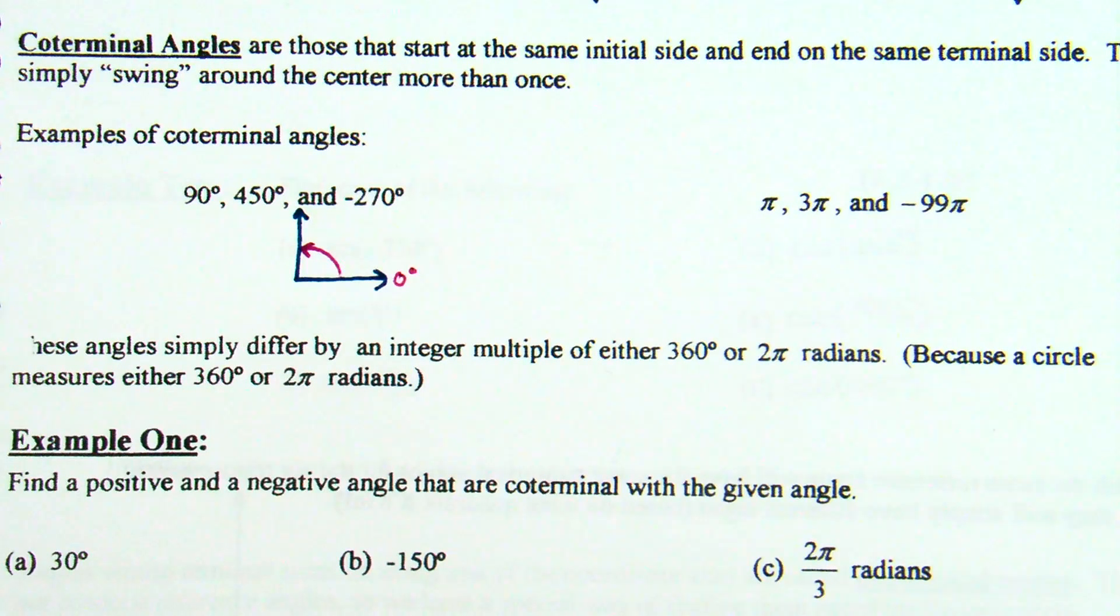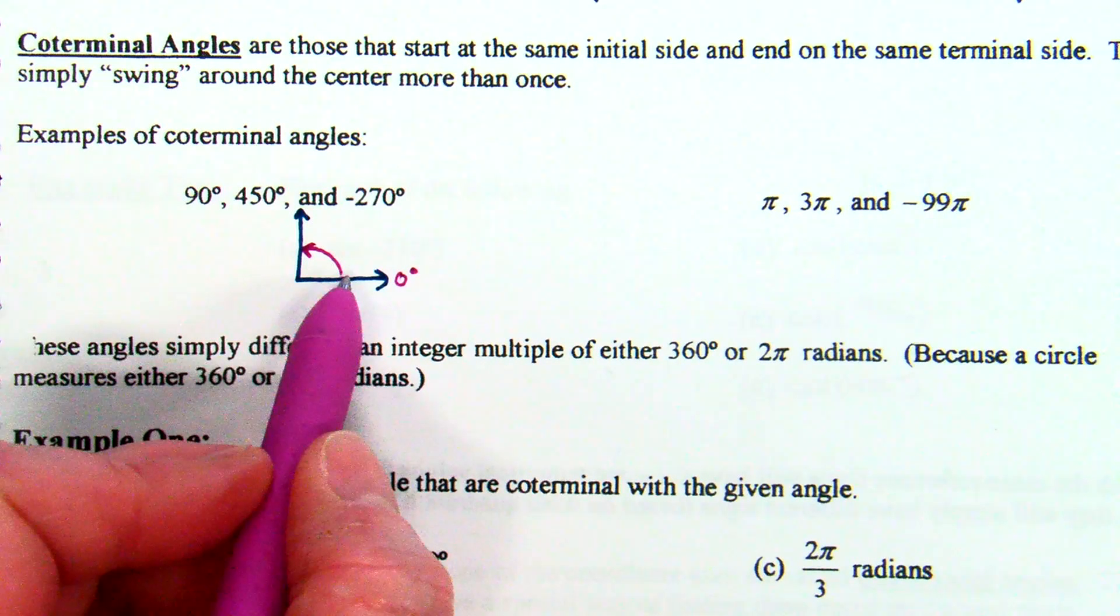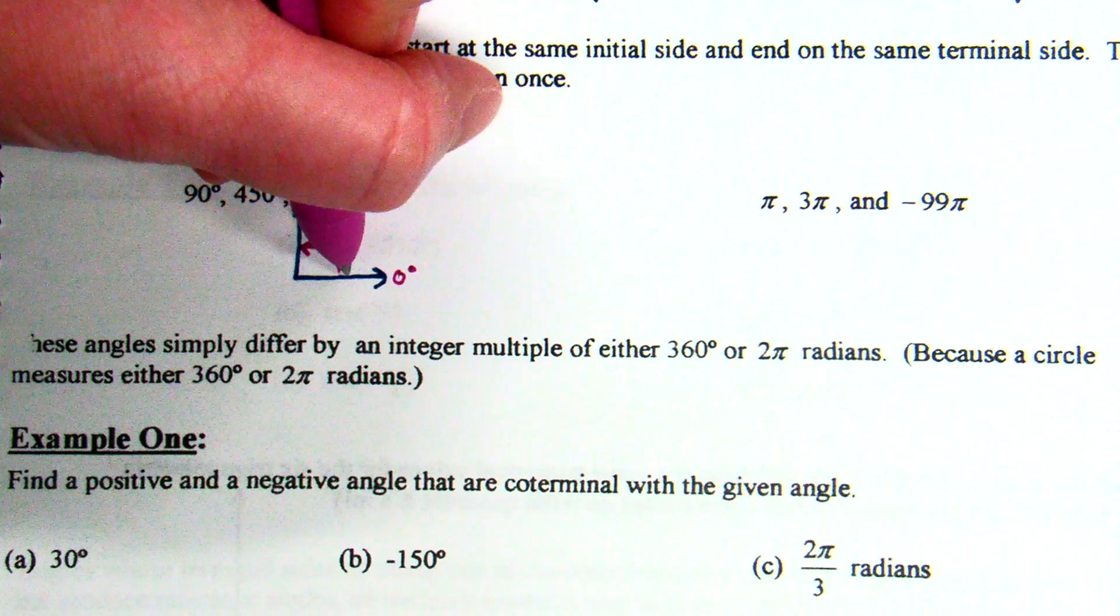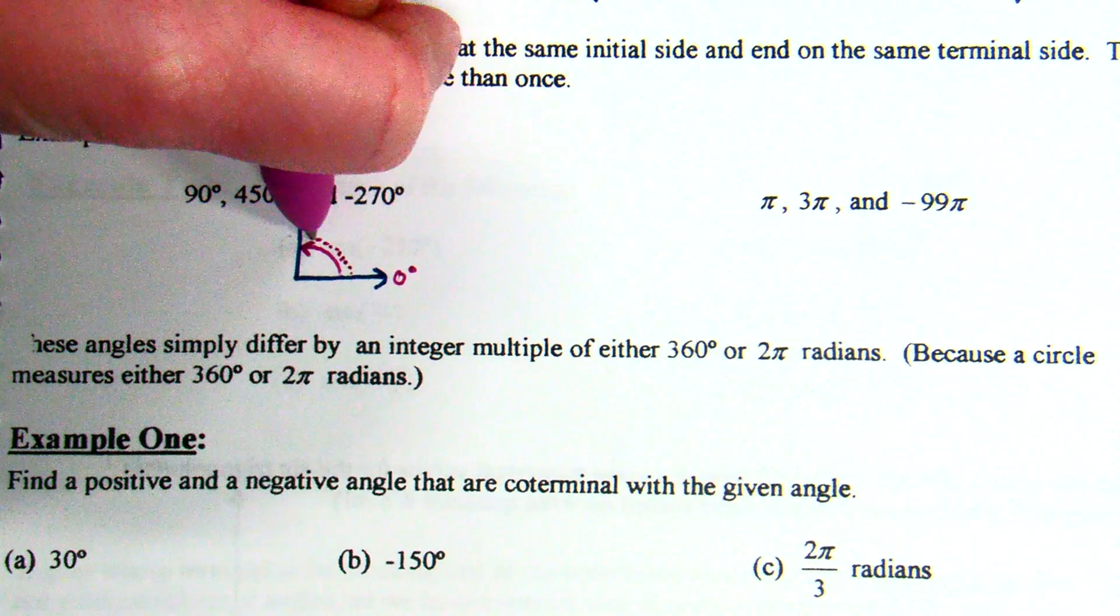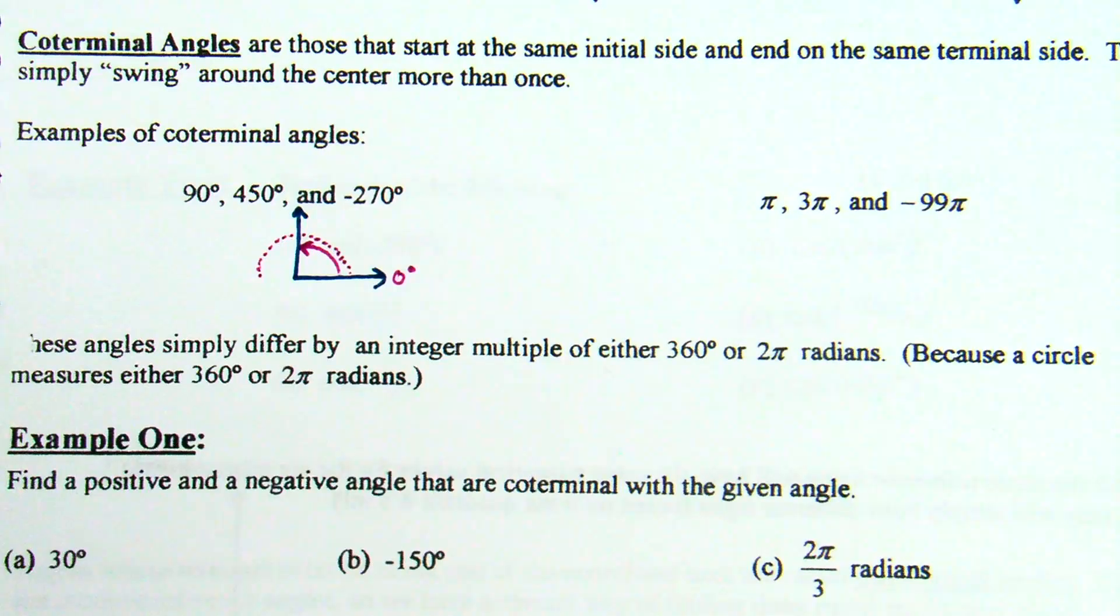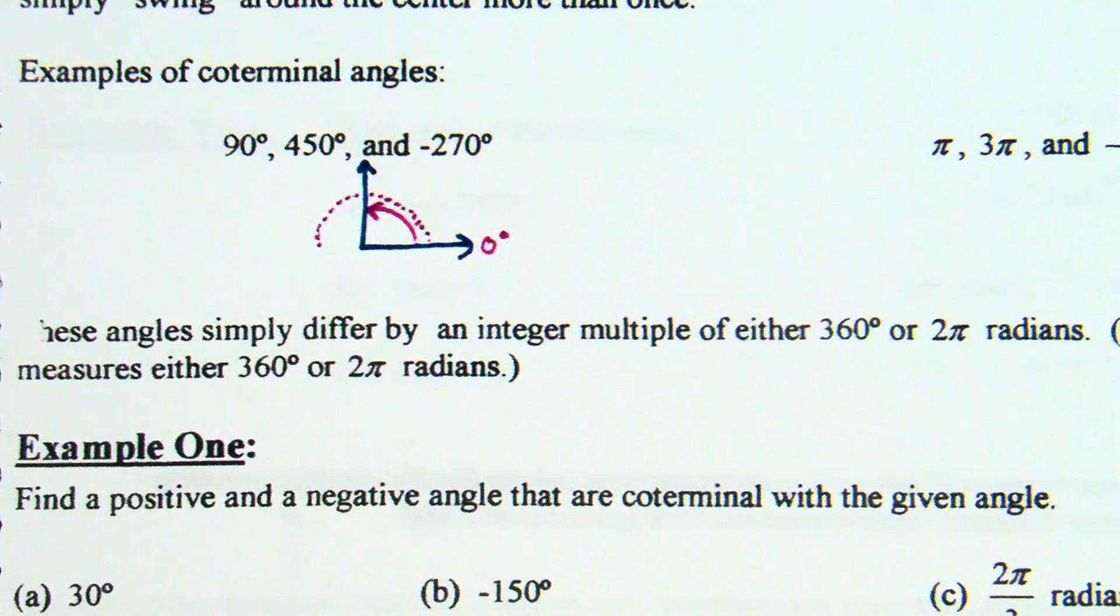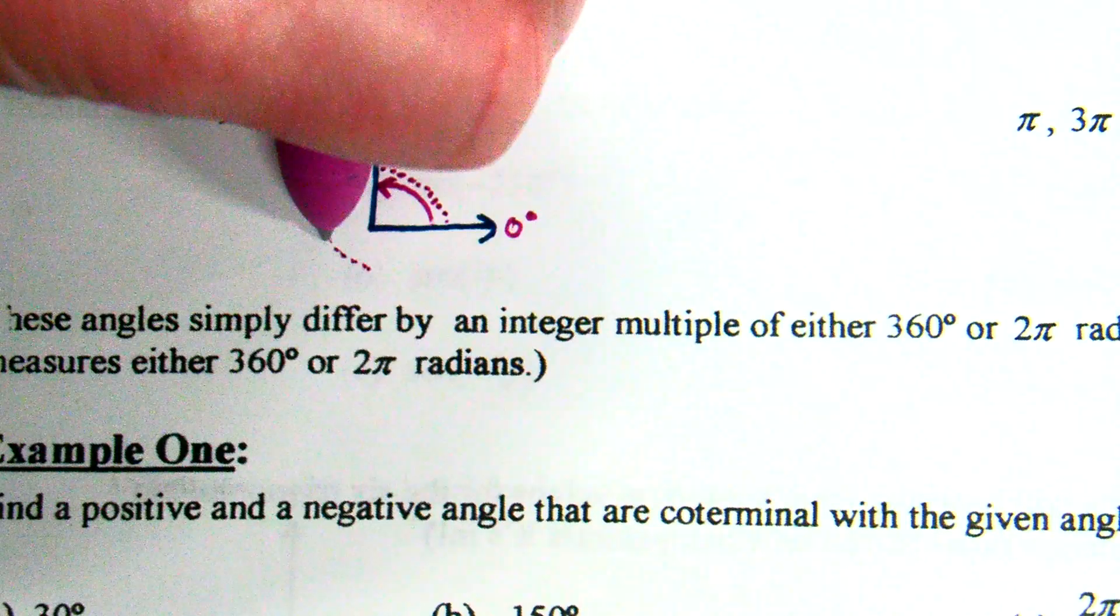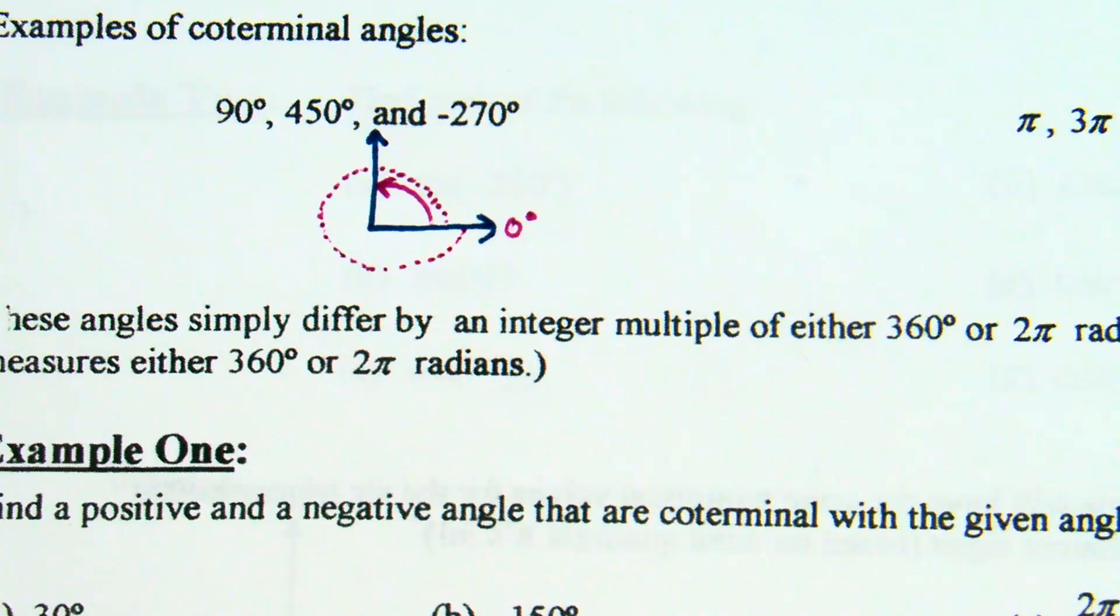If I start here, this is 90. We're going to go in the positive direction. So we're going to go counterclockwise. If I start right here, this is 90. What am I at over here? 180, and here. Keep going here. What am I at right now? 270. What am I at right there? 360.